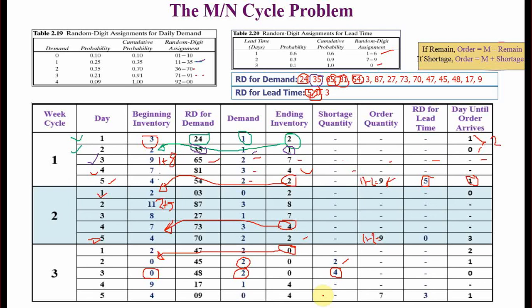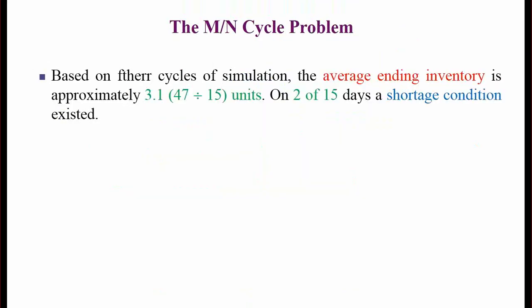The objectives of this simulation were to find the average ending inventory and the number of days when shortage conditions occur. Based on three cycles of 15 days, the average ending inventory is approximately 1.3 units, with a total of 47 units across all days. There were two days out of 15 days where a shortage condition occurred. That concludes the MN cycle simulation problem and the inventory system tutorial. Inshallah we will meet in the next tutorial — till then, everyone stay safe, stay home. Allah Hafiz, Assalamualaikum.